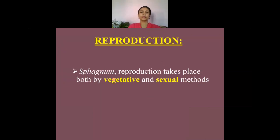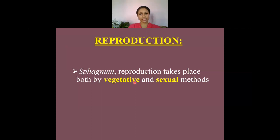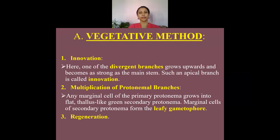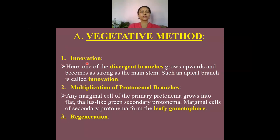Moving on to reproduction, the genus Sphagnum reproduces by two different methods: the first is vegetative reproduction and the second is sexual reproduction. Let us first see how it reproduces vegetatively, which occurs through three different methods.